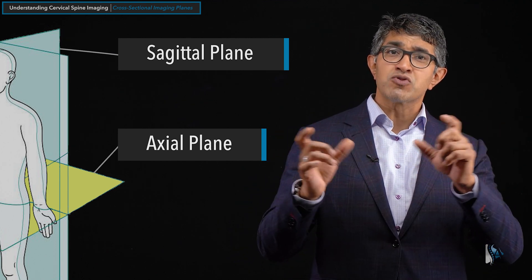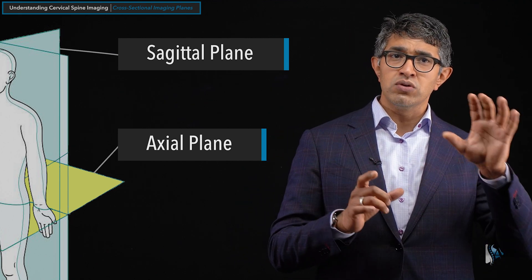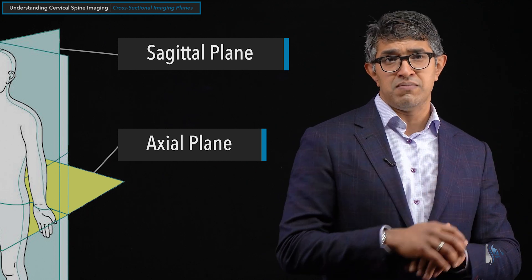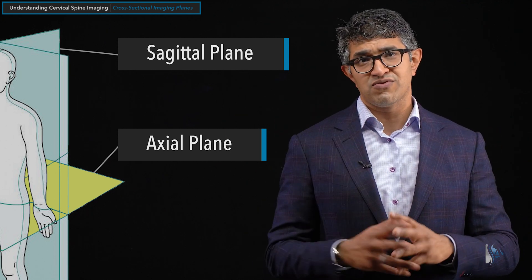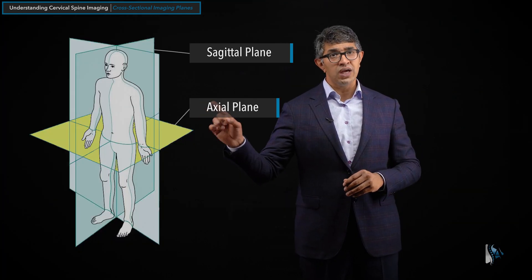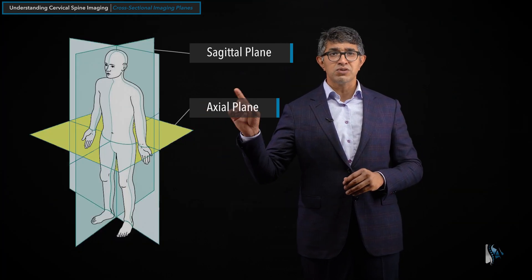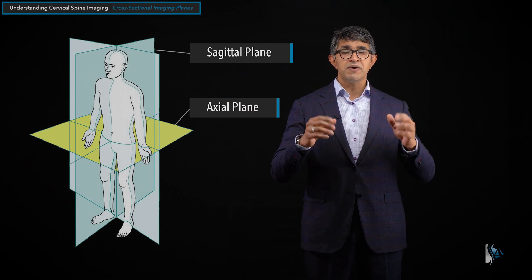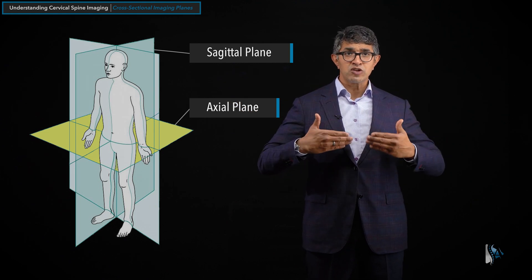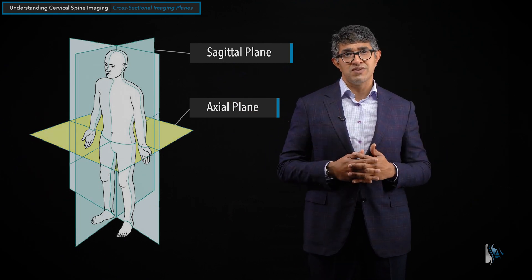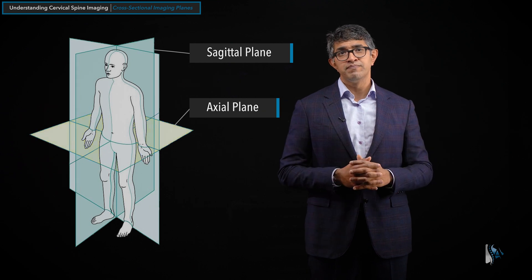So the image becomes left-right reversed. What you're looking at on the right side of the screen will be the left side of the body, and vice versa. That's the axial plane — it can get confusing, but just imagine you're looking at a patient, standing at their feet, looking up at slices of them.